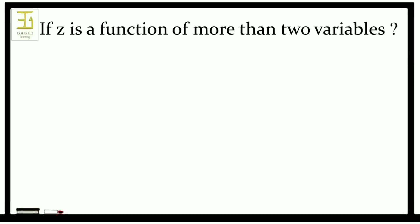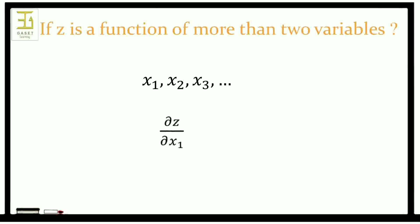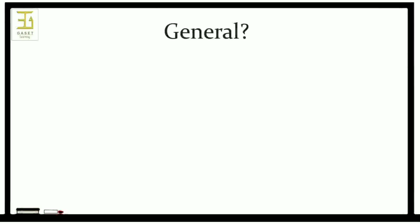So far we have been discussing z as a function of variables x and y, but what if z is a function of three or more variables? If z is a function of three or more variables like x1, x2, x3, etc., then the partial derivative of z with respect to x1 is obtained by differentiating z with respect to x1 keeping all other variables constant, written as dou z by dou x1.